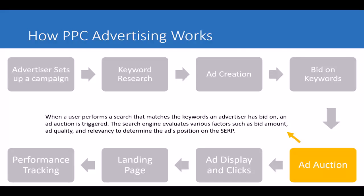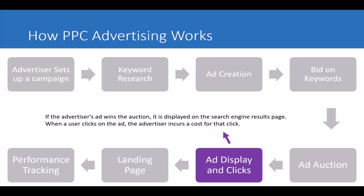When a user performs a search that matches the keywords an advertiser has bid on, an ad auction is triggered. The search engine evaluates various factors such as bid amount, ad quality, and relevancy to determine the ad's position. Everything that happens here occurs automatically behind the scenes — it is the Google search algorithm that determines where to place your ad. All you know is that your ad is showing on Google and will appear in first, second, or third position depending on your bid amount.